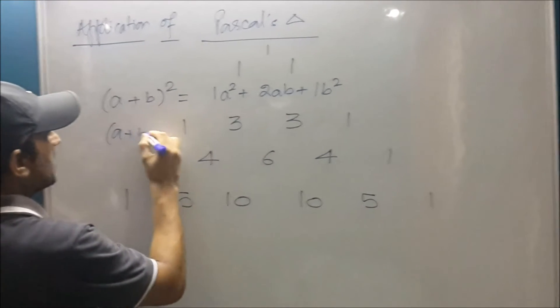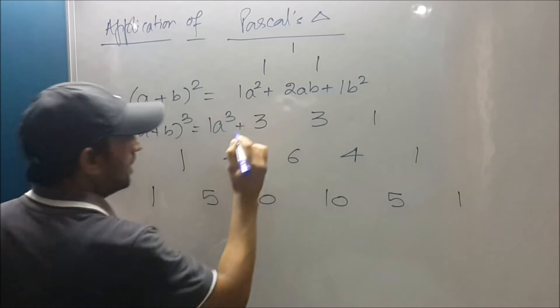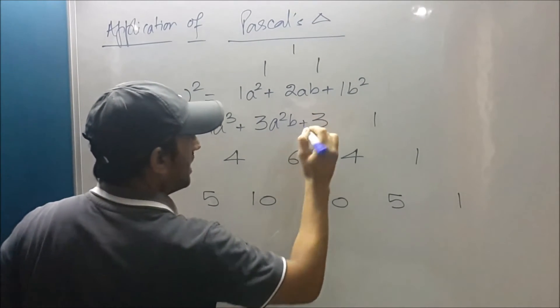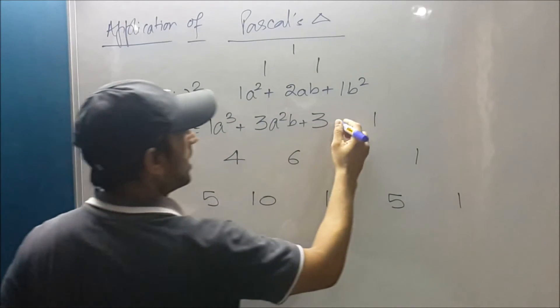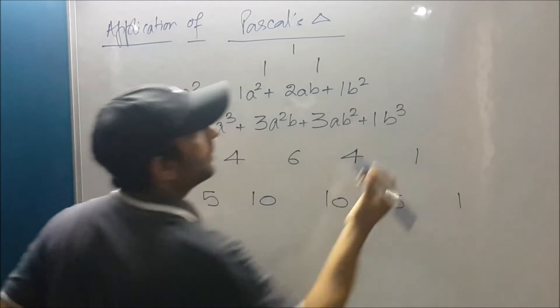I am now taking you to (a + b)³. So this is a³, and I'm reducing the power, this is a²b and giving that power to b, again reducing the power on a, and then finally it is b³.